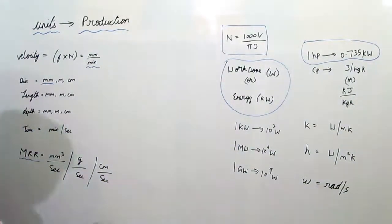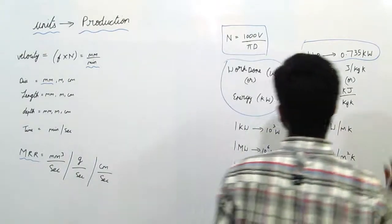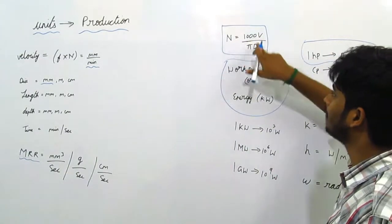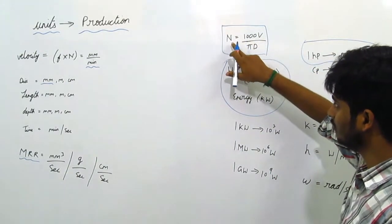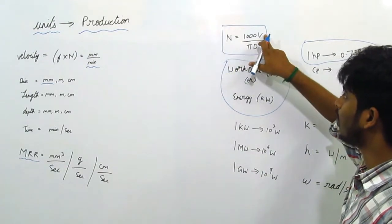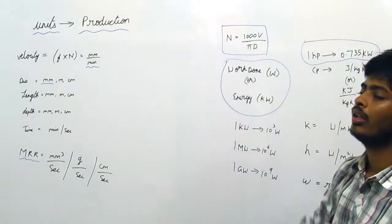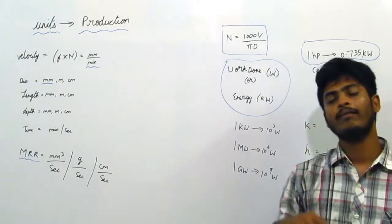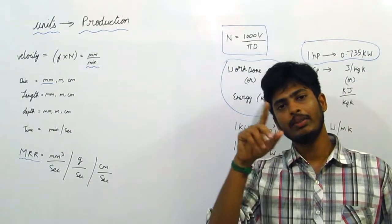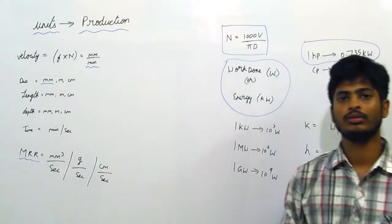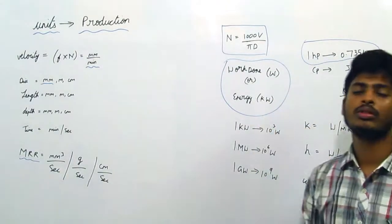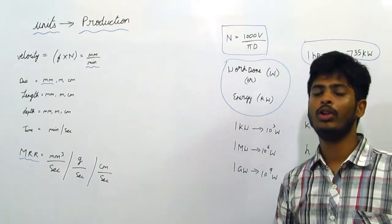N is equal to 1000V by πD. N is spindle speed, V is velocity, D is diameter. We multiply this thousand in order to convert velocity from meter per second to mm per second. In problems, most of the velocity values will be given in meter per second.